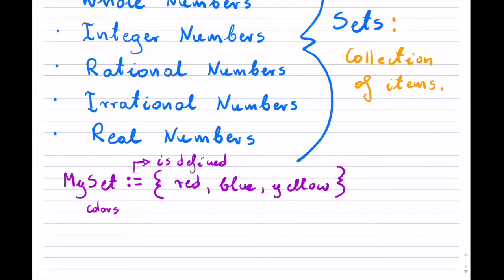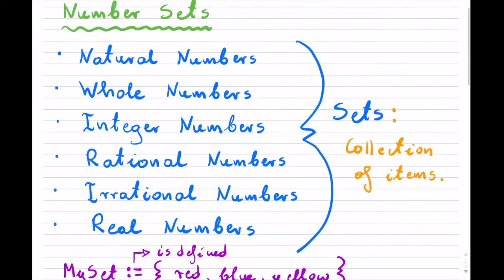However, in math, the fundamental number sets with a particular characteristic are the following. It's the natural numbers. The natural numbers we typically write out with a capital N. Then whole numbers, which we would write with a capital W.